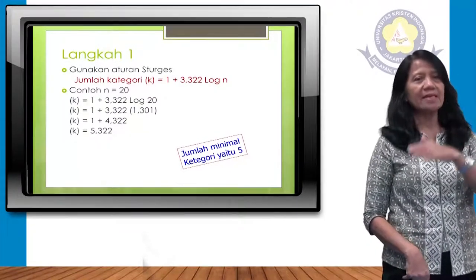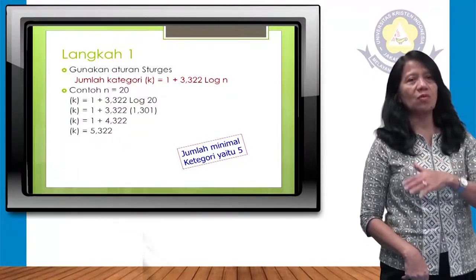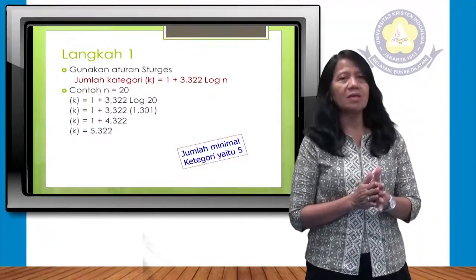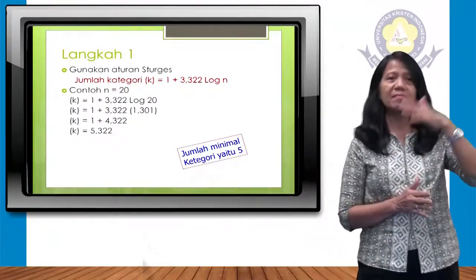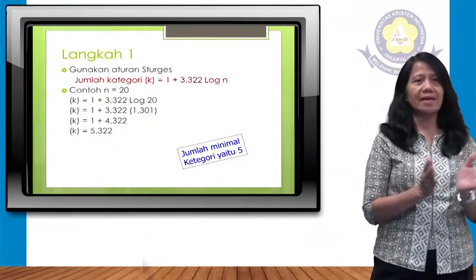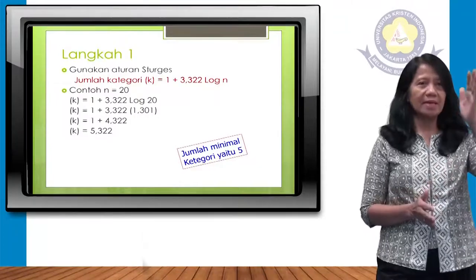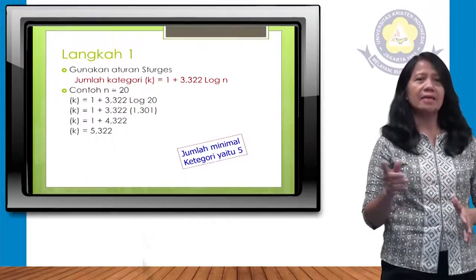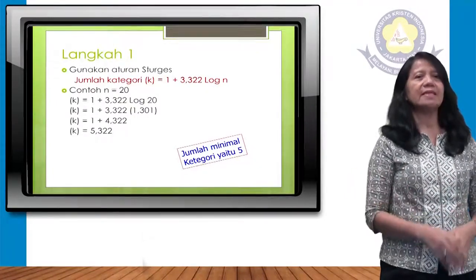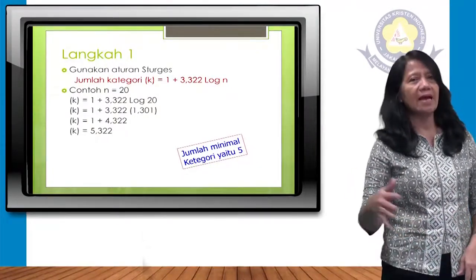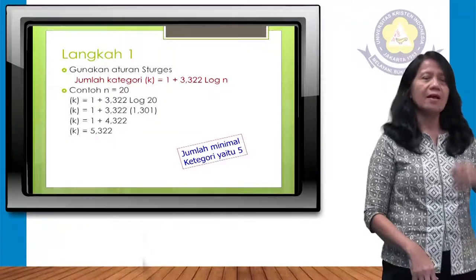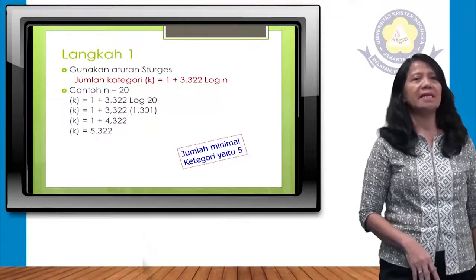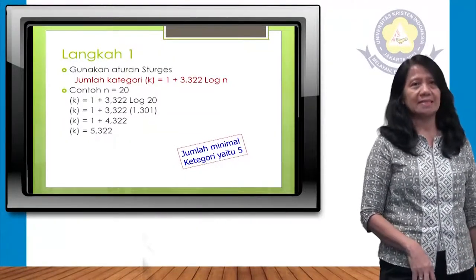Karena 0,322 berada di bawah angka 0,5, maka kita hilangkan desimalnya. Jadi K-nya adalah 5, kelasnya menjadi 5 kelas.